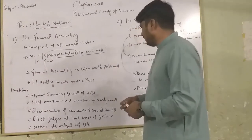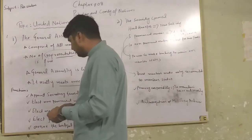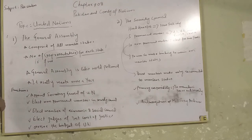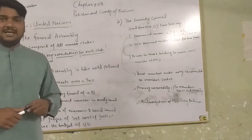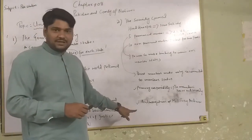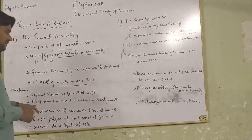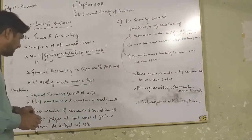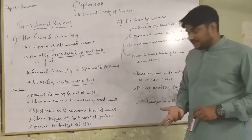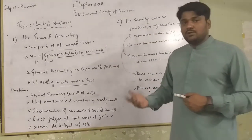The General Assembly is also known as the World Parliament. It meets each year. The functions of the General Assembly include: appointing the Secretary General of the United Nations; electing non-permanent members of the Security Council; selecting members of the Economic and Social Council; electing judges of the International Court of Justice; and overseeing the United Nations budget.